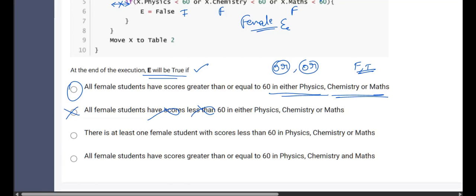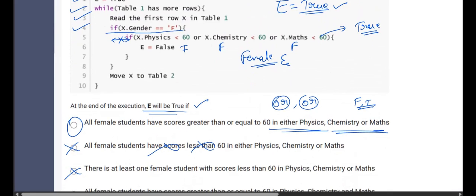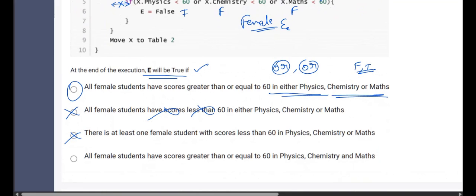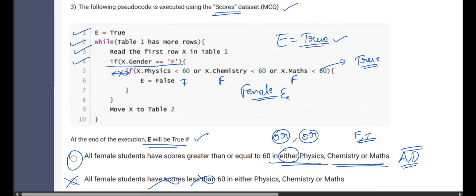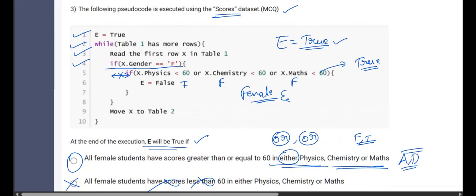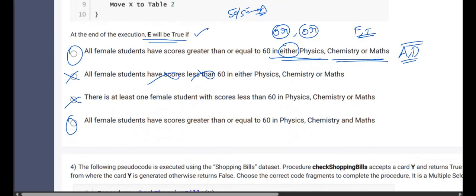There is at least one female student with scores less than 60, no. If it is less than 60, then E will be false, so this is also not the correct answer. However, all female students have scores greater than or equal to 60 in physics, chemistry and mathematics. Right. So we are also sorting option D. If you compare option C and D, here the most important thing to observe is they have used a word called either here. That means there is a possibility that it can happen and it cannot happen. It is just 50-50 for option C.